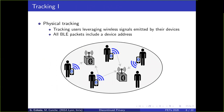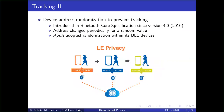Let's introduce some background about physical tracking. Most physical tracking systems leverage wireless signals emitted by devices carried by users over time, in particular a static identifier called the device address, which is included in all BLE packets. To prevent tracking, device address randomization was introduced in the Bluetooth Core specification since version 4.0 — since 2010 — to change the real device address periodically to a random value. In our study, we found that Apple adopted randomization within its BLE devices.